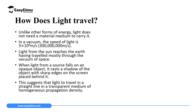Since we are interested in the rectilinear propagation of light — the property of light in which it travels in a straight line — from the three media of solid, liquid, and gas, we will single out air. We are going to consider air as our medium and investigate how light travels in it. Since air has almost a uniform optical density, light will travel in a straight line in air.